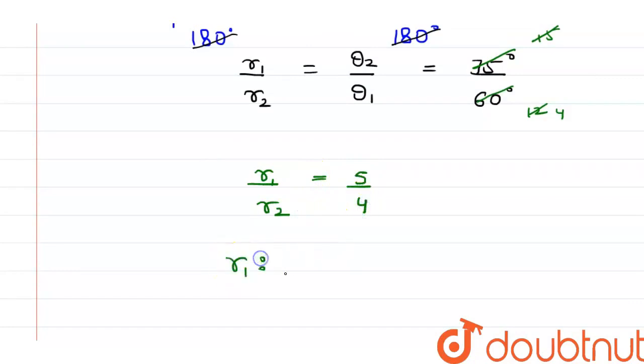So the ratio of their radius is 5 is to 4, and hence we are done. Thank you.